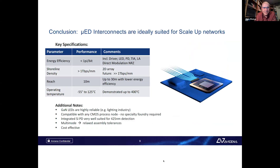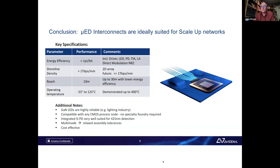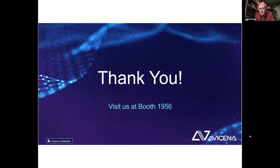In summary, micro LED interconnects offer: 1 picojoule per bit efficiency as a benchmark, 1 terabit per millimeter density, approximately 10-meter reach — extendable with some energy efficiency trade-off — and an operating range that can reach mil-spec, well beyond anything typically used in communications. This is an interesting new technology with strong relevance to scale-up AI networking.